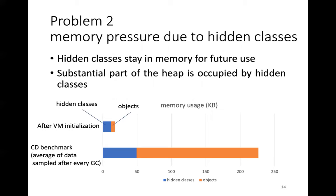Another problem is memory pressure due to hidden classes. Hidden classes stay in memory for future use. We found that these hidden classes consume the substantial part of the heap. For example, after VM initialization, we found that 12KB was used for hidden classes. And for the collision detector benchmark, about 50KB was used for hidden classes.